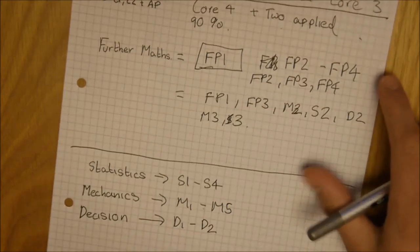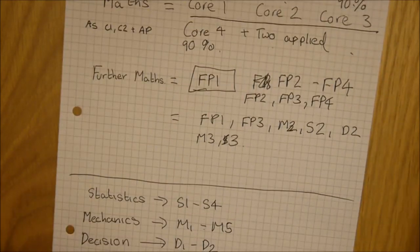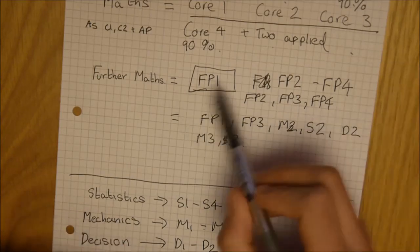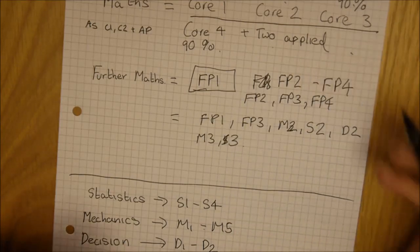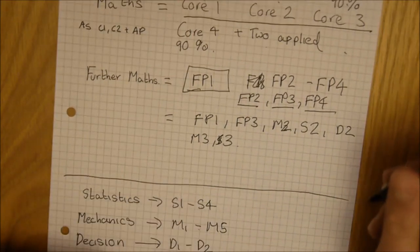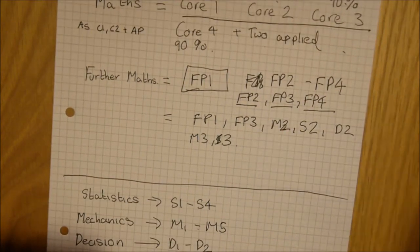With further maths, it's slightly different. With this, you need to get 90% in whichever further pure unit you do at A2, so FP1 doesn't really count for your A2. So you need to get either 90% in FP2, FP3 or FP4, and then in whichever other two modules you do at A2.